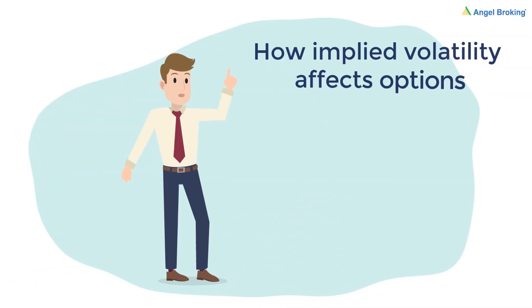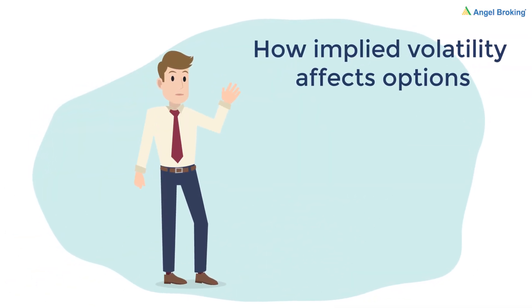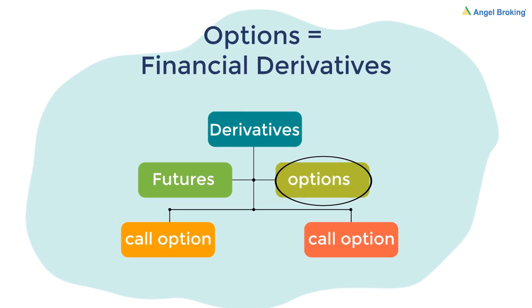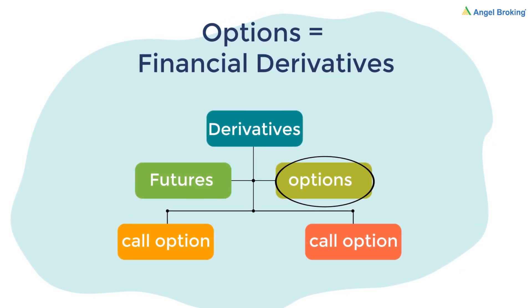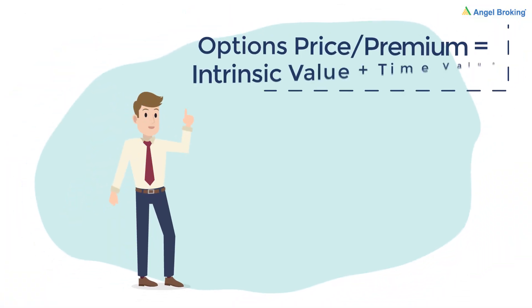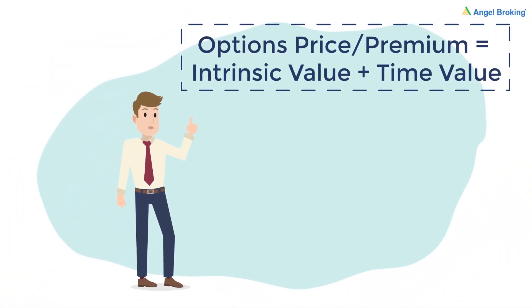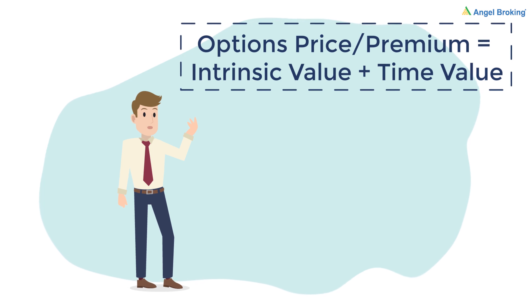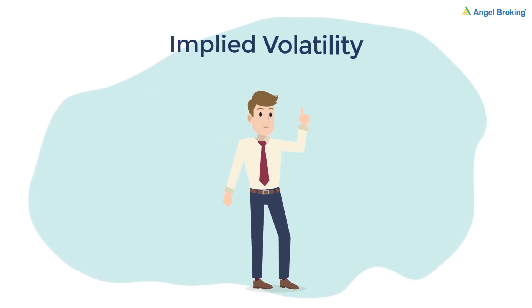Dear investor, today you will learn how implied volatility affects options. Options are financial derivatives that get their value from underlying assets. An option's price, also known as its premium, is composed of two numbers: intrinsic value and time value. Implied volatility is part of time value.